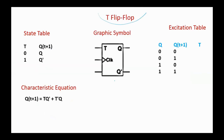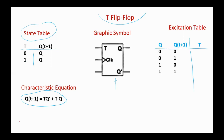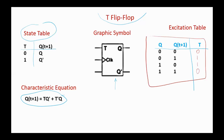Now, regarding the T flip-flop, here is the graphic symbol. Here we have the state table. You remember, if T is zero then we have the store state, and if T is one, store complement. This is the characteristic equation for the T flip-flop. Regarding the excitation table: on zero to zero we have T zero; on zero to one T was one; one to zero T is one; and from one to one, T is zero. Here is the excitation table for the T flip-flop.